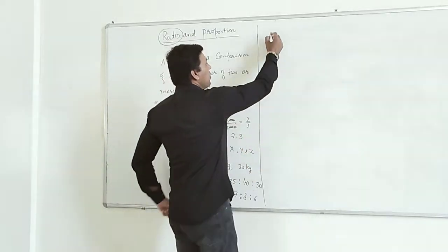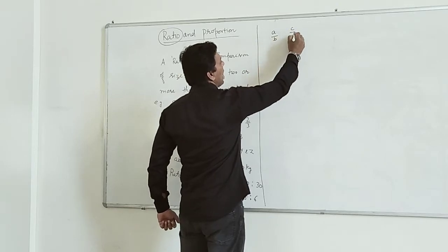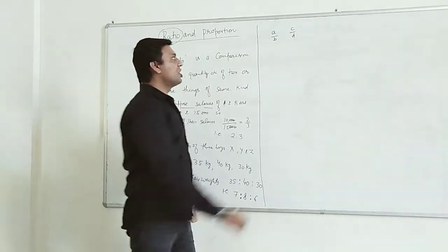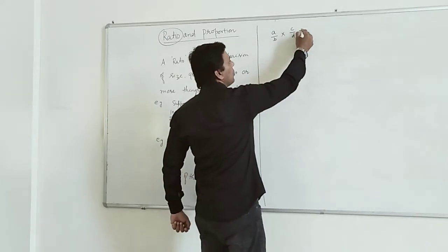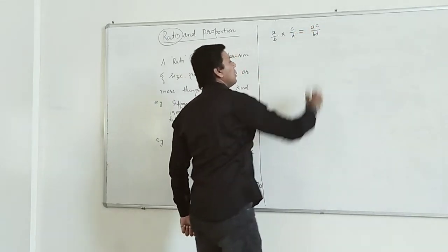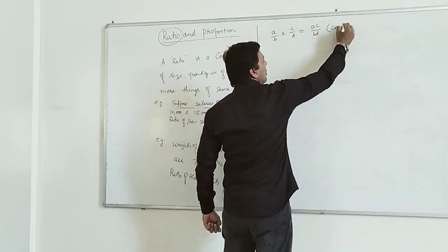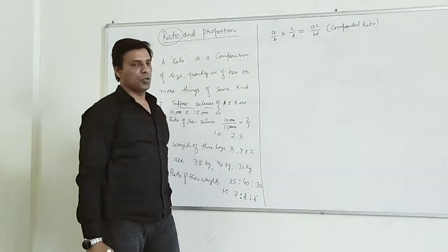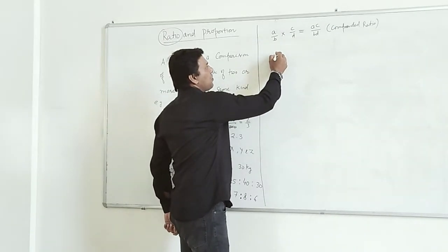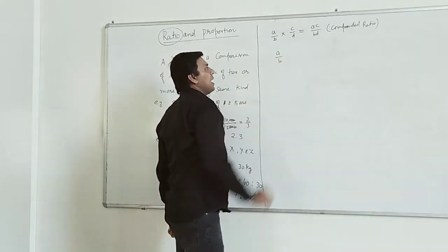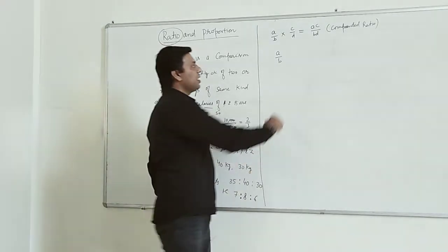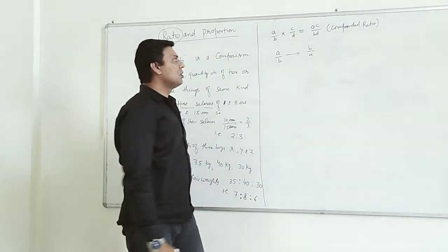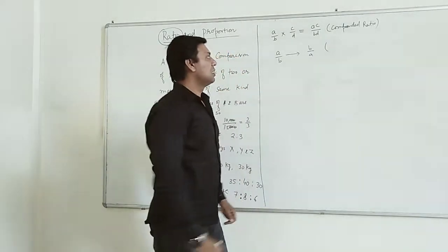Now suppose we have two ratios, A ratio B and C ratio D. Then the multiplication of these ratios will be AC upon BD. So this is called compounded ratio. And if we reciprocate a ratio, meaning if we are reversing this ratio, this is called reciprocal ratio.